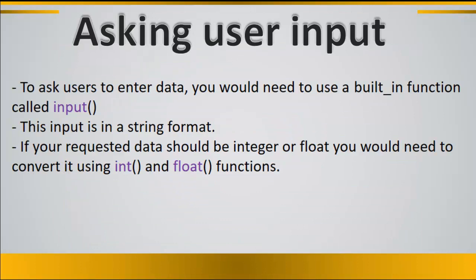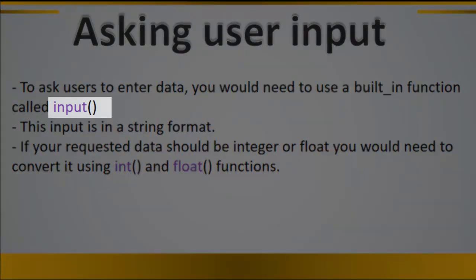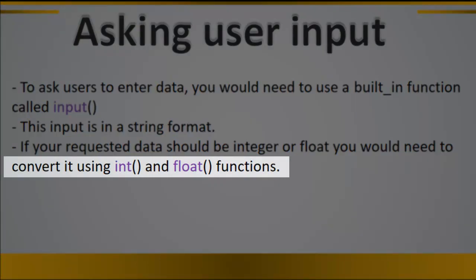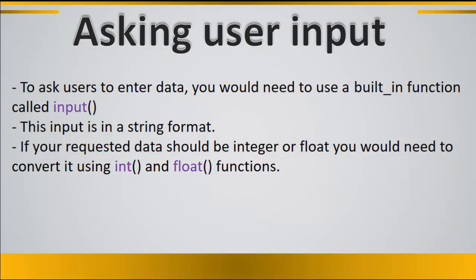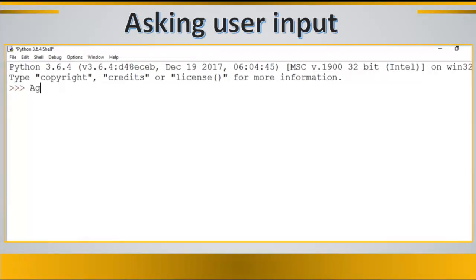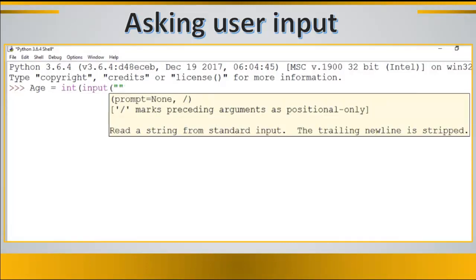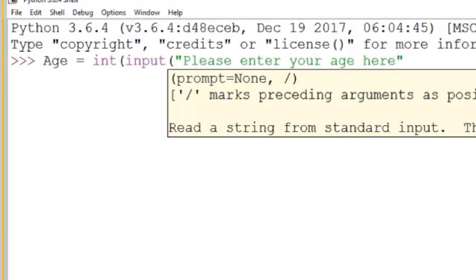If you want to make your software more dynamic, you would need to ask for user input. In this case, you use a function called 'input'. Bear in mind that the input function gives you data in string format, so you need to convert it to integer or float. If your requested data should be an integer or float, you use the int() or float() functions. For example, to get an age variable, you write: age = int(input('Please enter your age: ')).